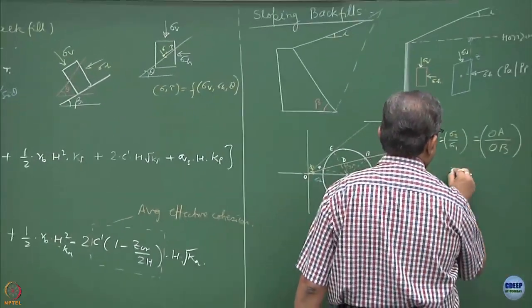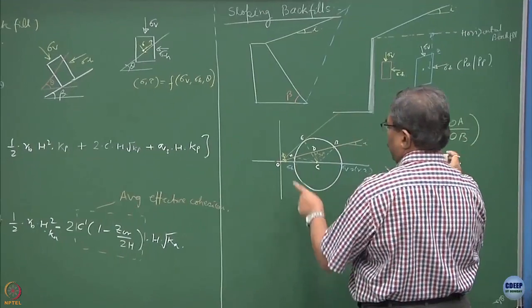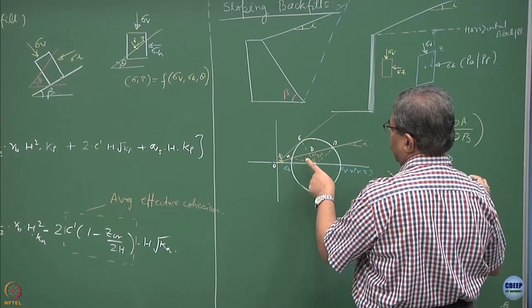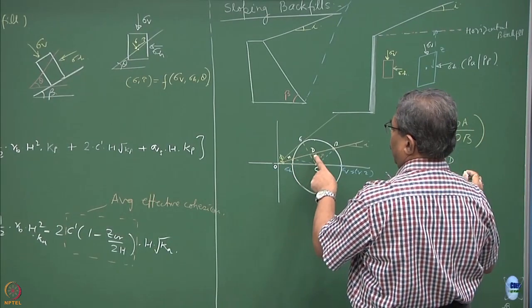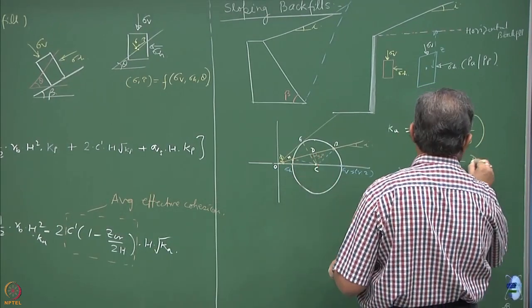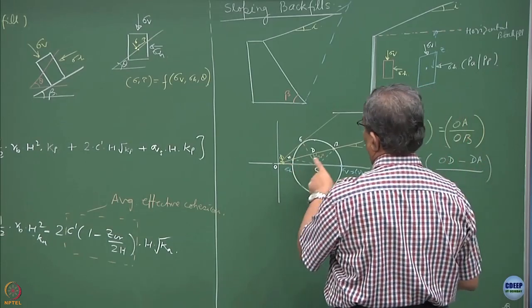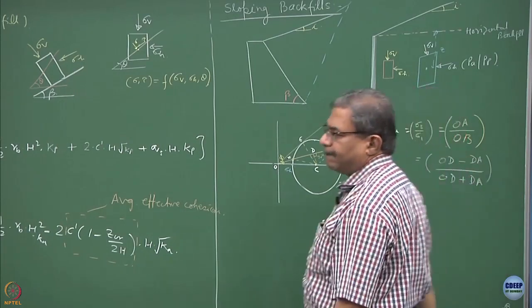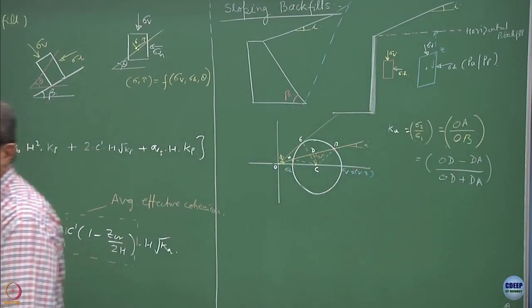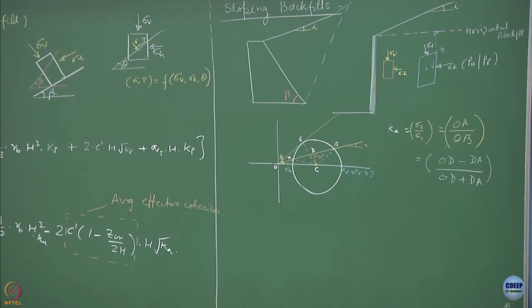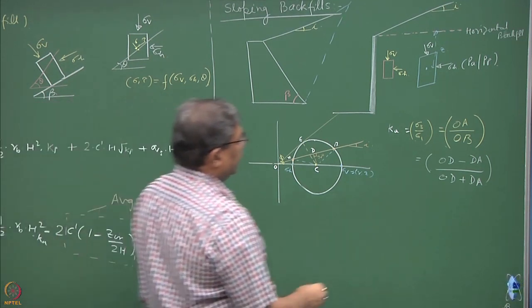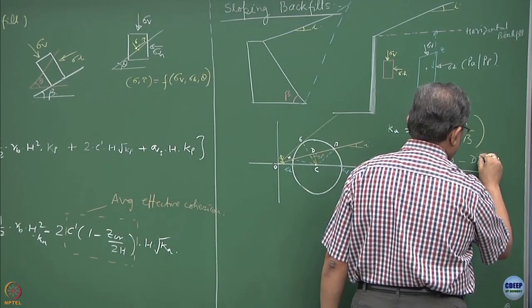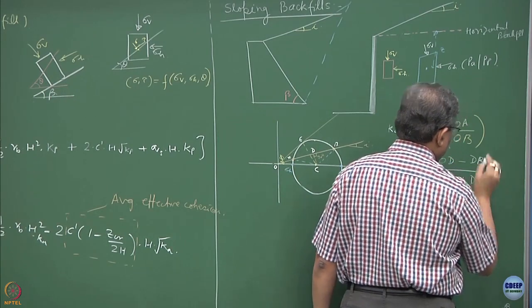What is OA equal to? OA is equal to, now you can write it in terms of OD, OD minus DA divided by OB, OD plus DA and DA is equal to DB. So this can also be written as OD minus DB and DB.